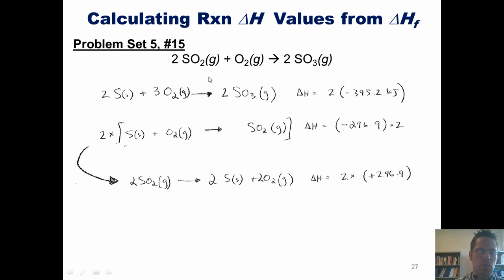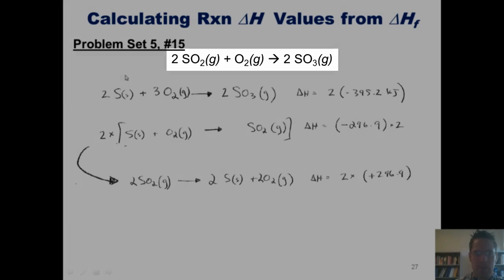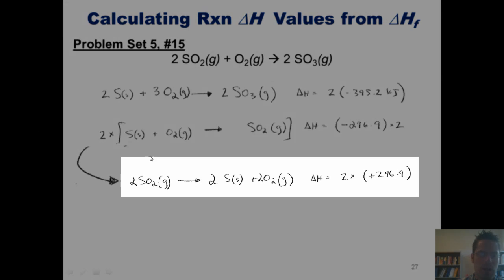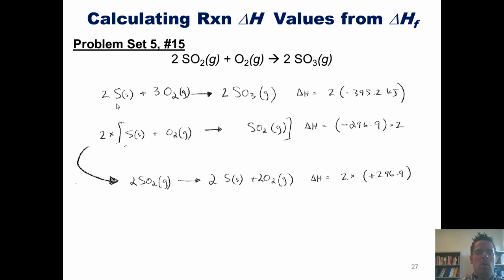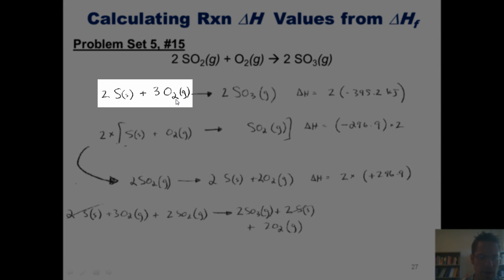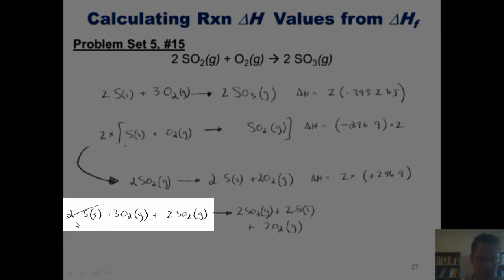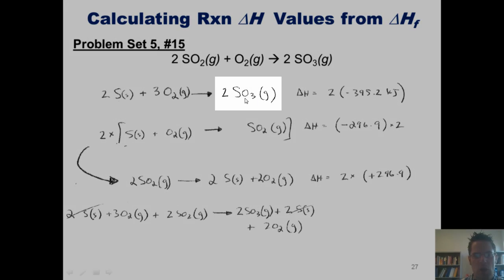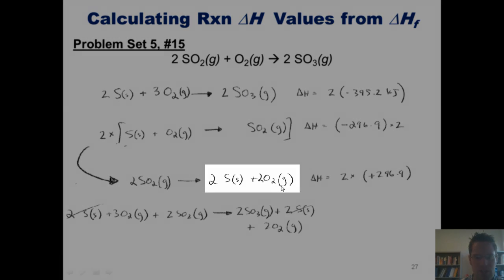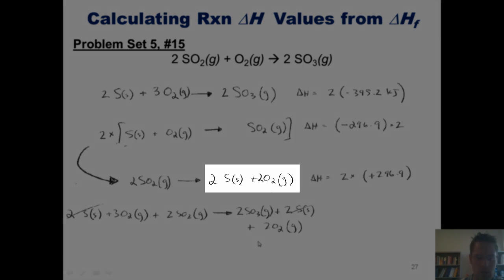Now we add up the two equations that we have. When we do that, you'll see we get the overall expression shown here. I have two sulfurs and three O2s on the left side, adding with two SO2s to give the overall left side of my final equation. I have two SO3s, two Ss, and two O2s on the right side.